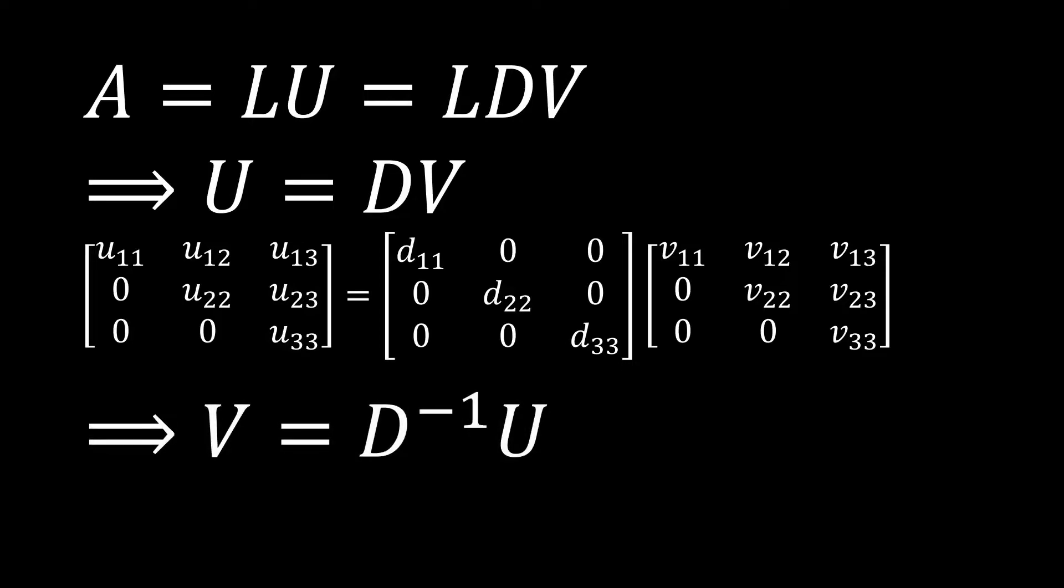But this tells us something really nice and simple. V is equal to D inverse U. That's just some simple basic linear algebra right there. But why is that particularly useful?